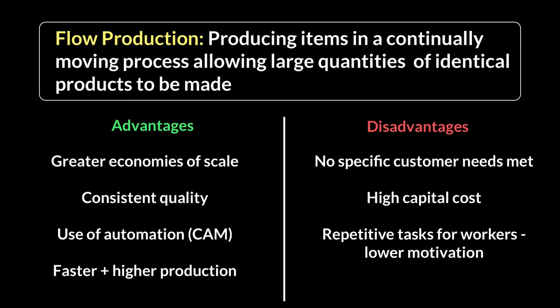However, there are disadvantages. Firstly, you have to let go of customization — you're making a standardized identical product, not meeting any specific customer needs. Secondly, to produce in such large quantities and be capital intensive, you need a lot of money: finance is required for a big factory, machinery, and worker training. Finally, this is not very exciting for workers — they're just monitoring gauges and screens, which can be demotivating. On the upside, labor costs will tend to be low, though offset by the significant investment in capital and machinery.